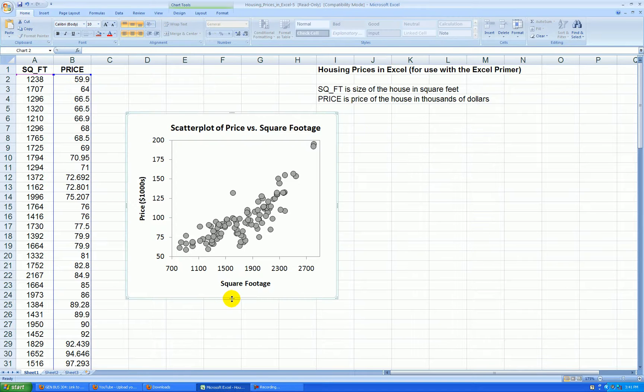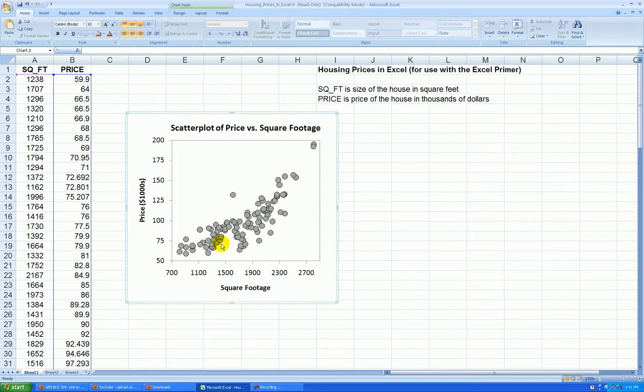And I can see there's a fairly strong, positive, somewhat linear, but a little bit curved relationship between price and square footage. Bigger homes tend to sell for more money. So that makes sense.